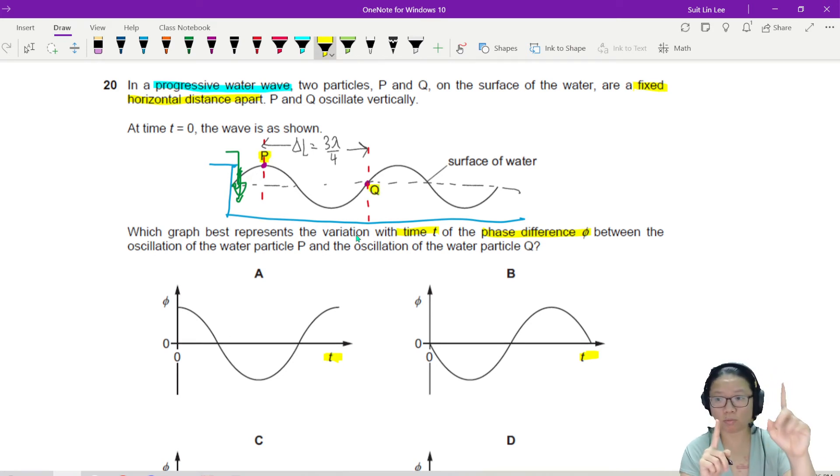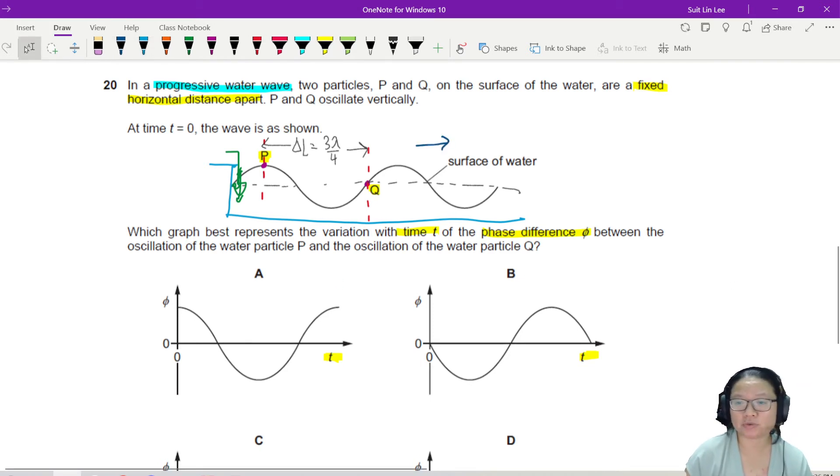So P and Q will not move. They are fixed at that position and they will not move left and right. Okay, I know that the water shape will travel. Okay, but the particles P and Q itself will not move.